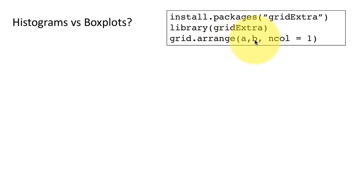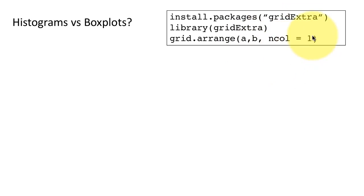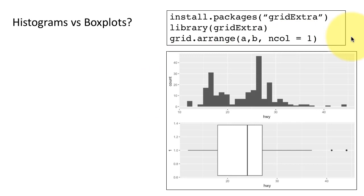All we have to do is say grid.arrange and then put in the plots we want to combine — it doesn't have to be two, it could be several: a, b, c, d, whatever. In this case we've got 'a' our histogram and 'b' our box plot. We have the option of specifying how many columns and rows. Here I'm saying ncol equals one because I want the histogram and the box plot to appear one on top of the other. These are two separate ggplot plots that gridExtra has combined into one.